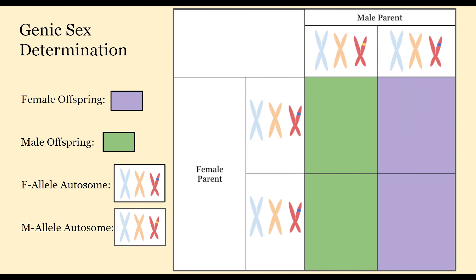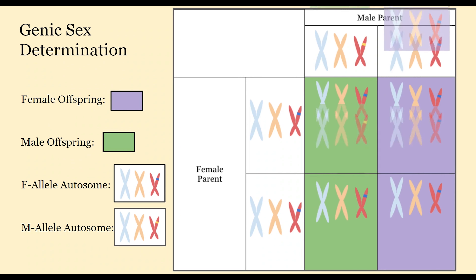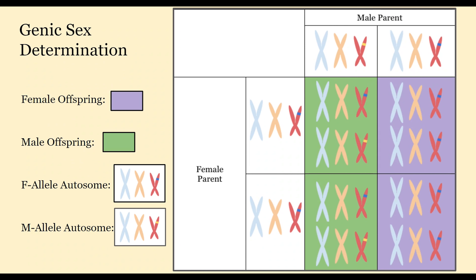We also have genic sex determination, which also has no sex chromosome, but this mechanism does have a sex determining gene present on an autosome. As you can see here, we have our female allele autosomes and our male allele autosomes indicated by the different colored bands. It is again the male who is heterozygous for the alleles, where the females are homozygous for the female allele. So once again it is the male parent that is determining the sex of the offspring.